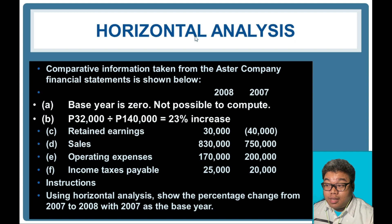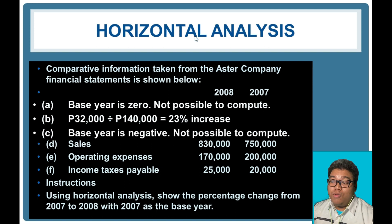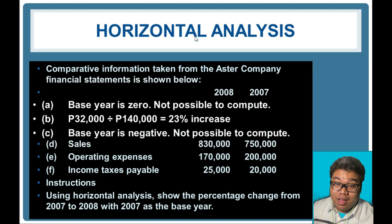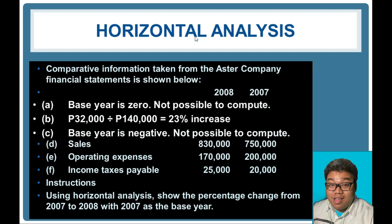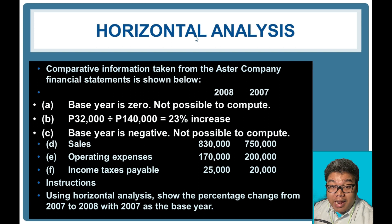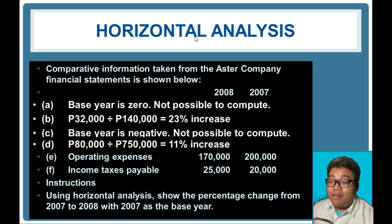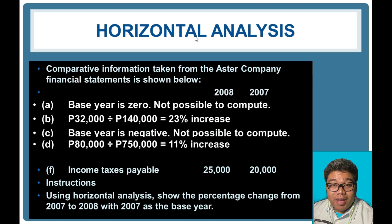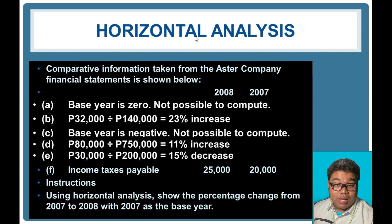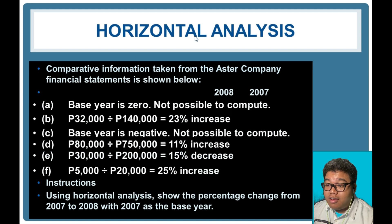However, when the base year is a negative number — as with retained earnings going from negative 40,000 to positive 30,000 — we cannot compute the horizontal analysis percentage. For sales: 830,000 minus 750,000 divided by 750,000 gives an 11 percent increase. For operating expense: 170 minus 200 divided by 200 gives a 15 percent decrease. For income taxes payable: 25 minus 20 over 20 gives a 25 percent increase.